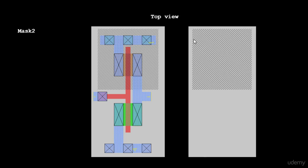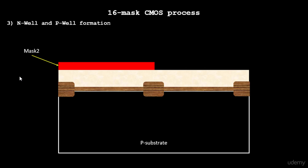What you see as a top view of your mask 2 is the cross-sectional view of your mask 2. So now it's very easy to relate the layout with your mask. This is how the fabrication team and the layout team communicate with each other.